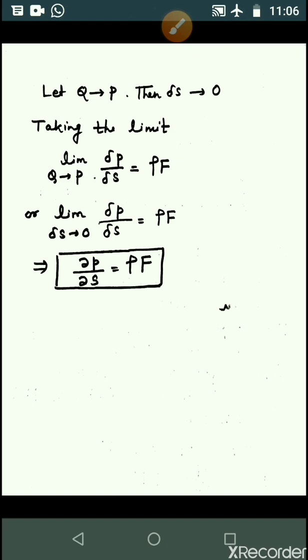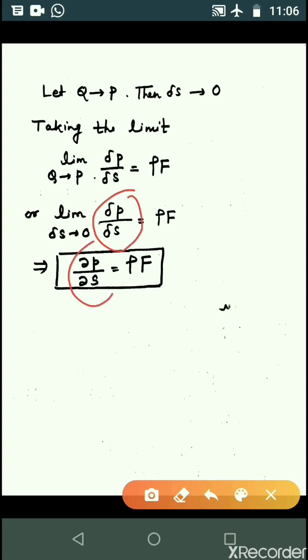Here, this del and this del are both different. This represents that P is a function of more than one variable, so del P by del S is equal to the partial derivative of P with respect to S. This equals rho F. If P is a function of a single variable, then this will become dP upon dS.